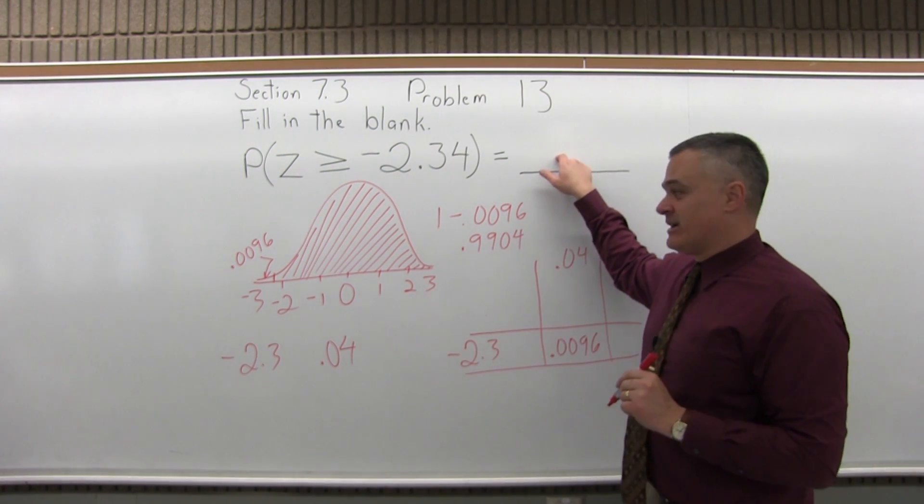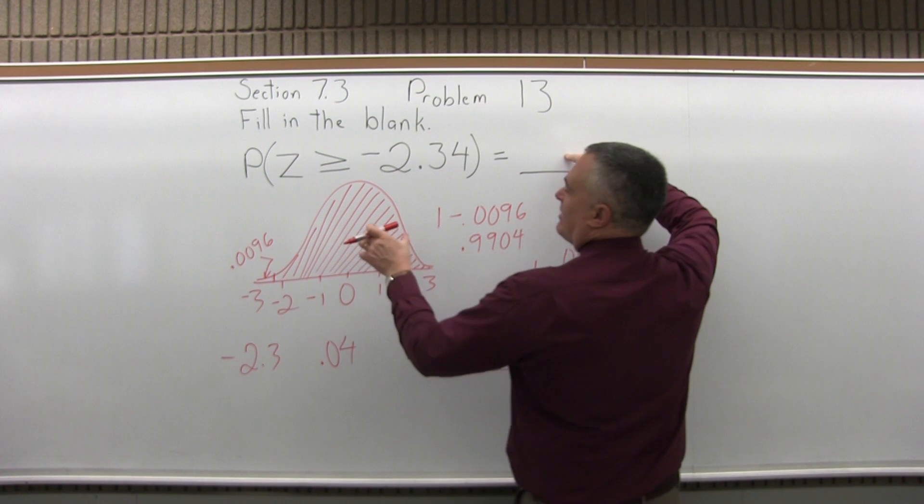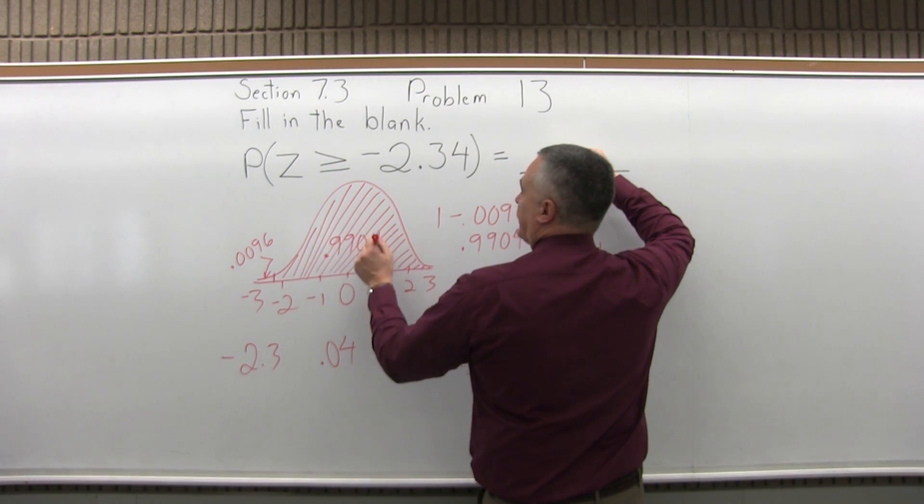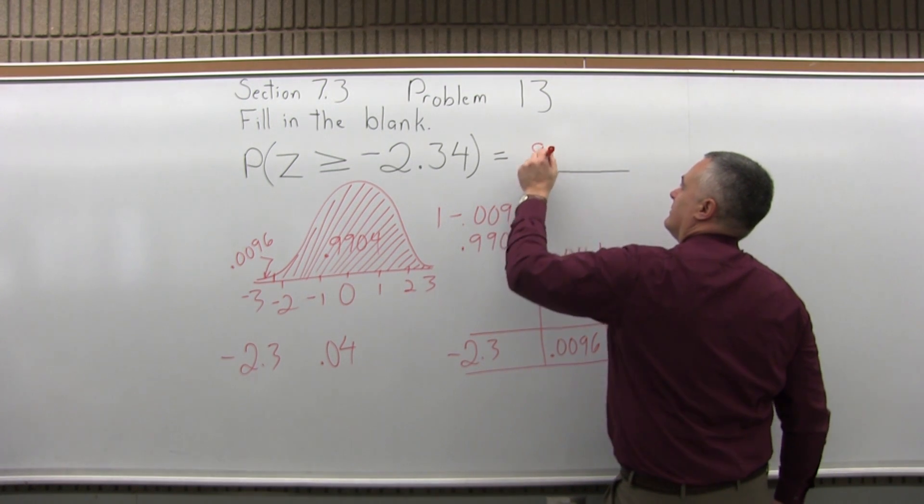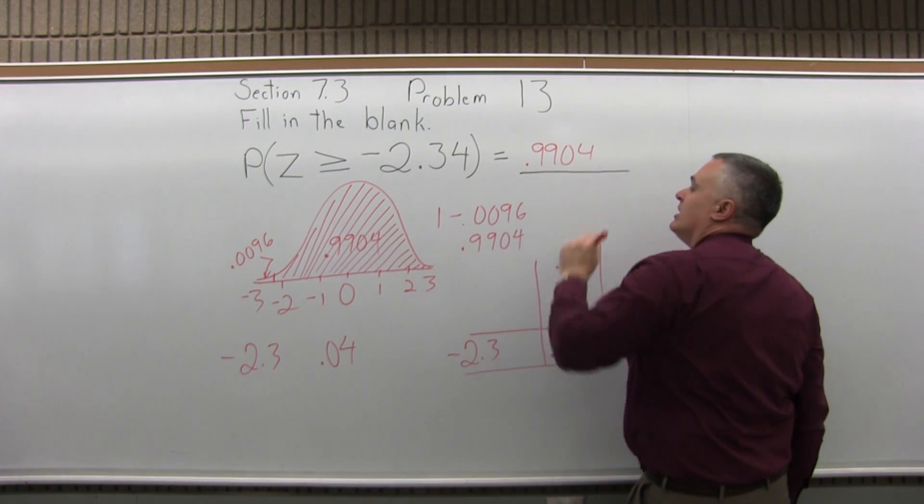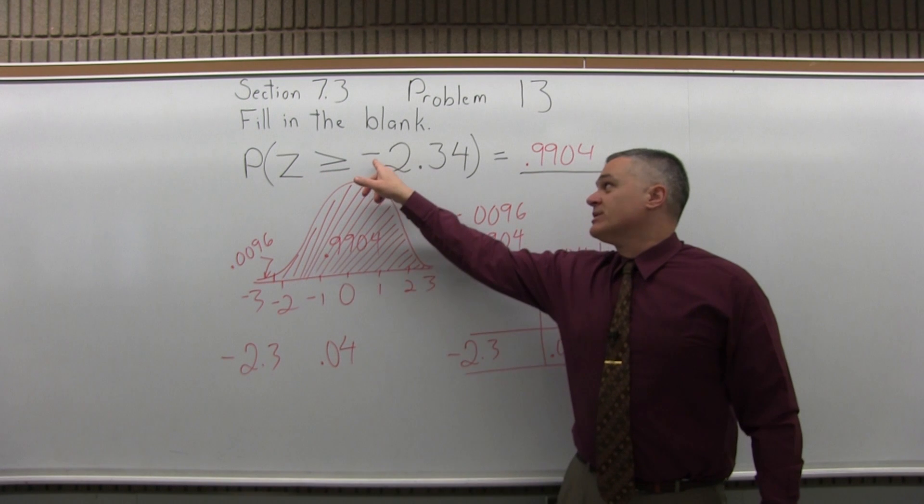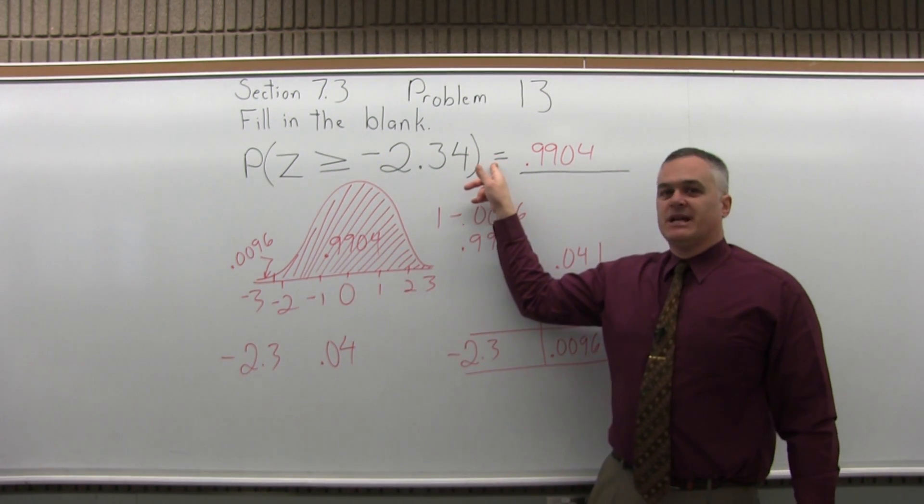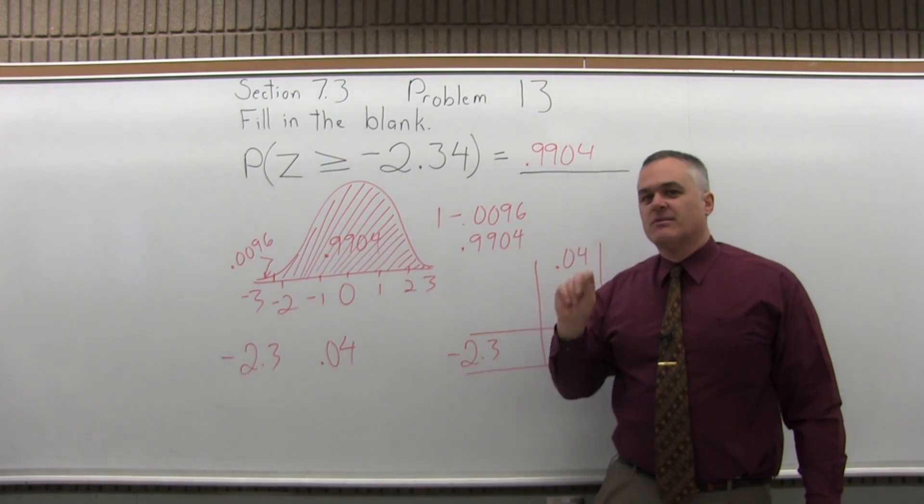That's the answer. This is the final answer. It goes in the blank. That's how much the shaded portion of the drawing is: 0.9904. So the probability that Z is greater than or equal to negative 2.34 is approximately a 99% probability, even a tiny bit more.